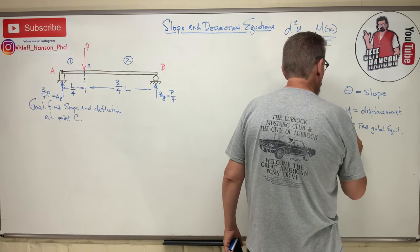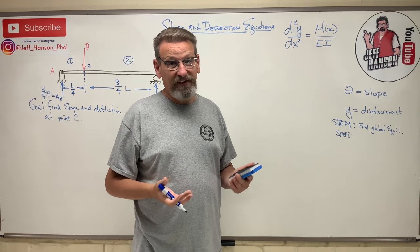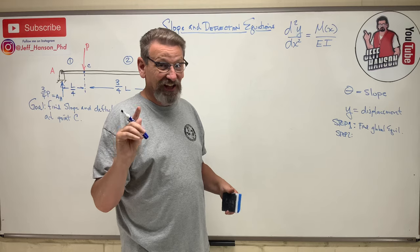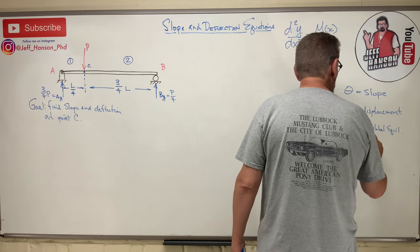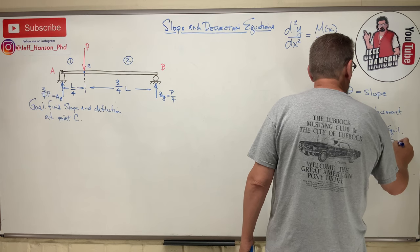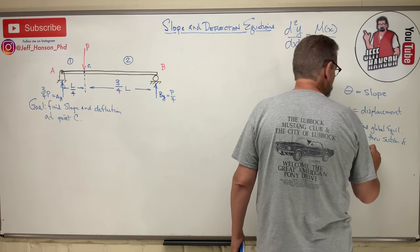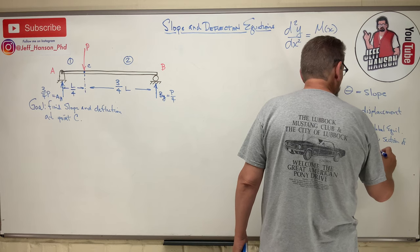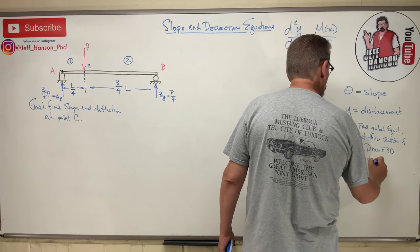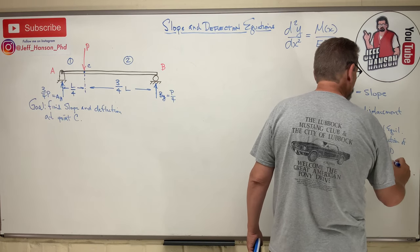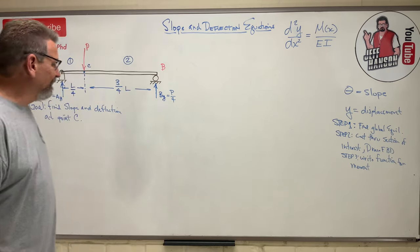Go get some popcorn because this is a long problem with a lot of algebra. Step two: cut through the section of interest and draw a free body diagram. Step three: write the moment function for each section.